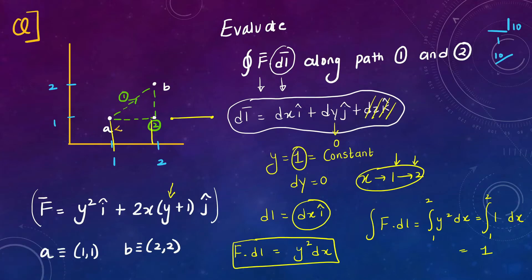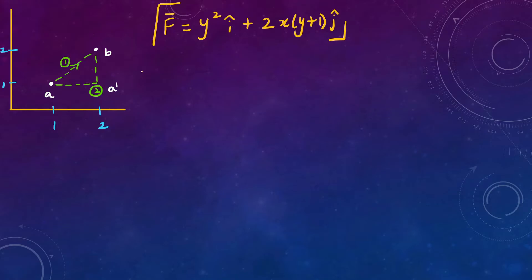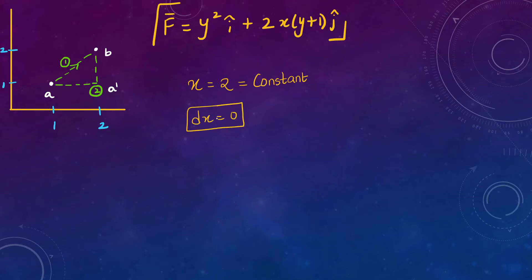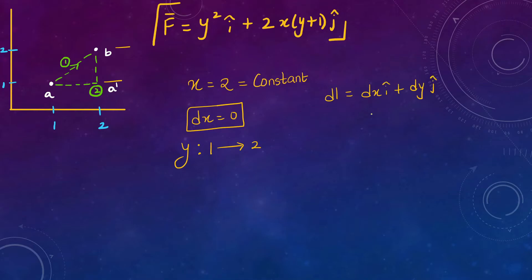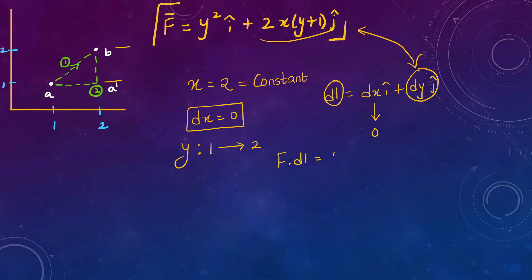Now for the vertical section of path 2: x = 2 is constant, so dx = 0. Here y varies from 1 to 2, and dl reduces to dy·j-cap. Taking F·dl, only the j-cap term survives, giving (2xy + 1)·dy. Since x = 2 on this vertical line, we get 4·∫₁² (y + 1) dy.